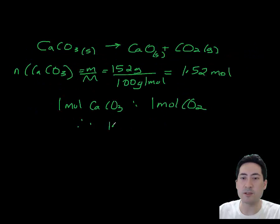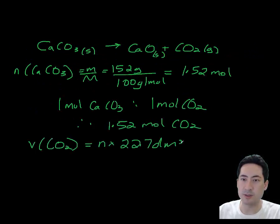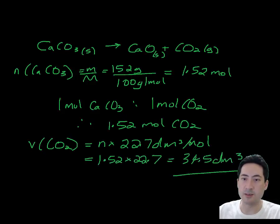We then times that out, it's a ratio. You could do cross multiplication: one mole is to 22.7, so 1.5 moles is to how many litres. When you times that out, or you could turn that into a formula like here, that gives you 34.5 decimetres cubed.